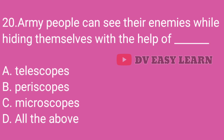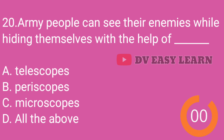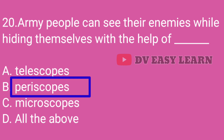Question No. 20: Army people can see their enemies while hiding themselves with the help of — Correct answer: Periscopes.